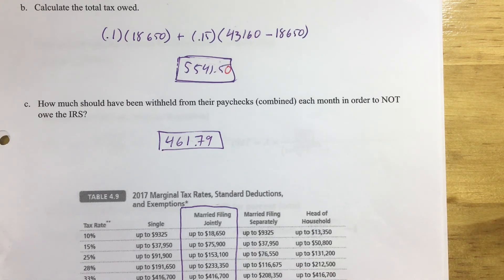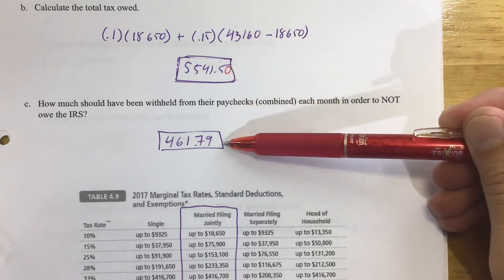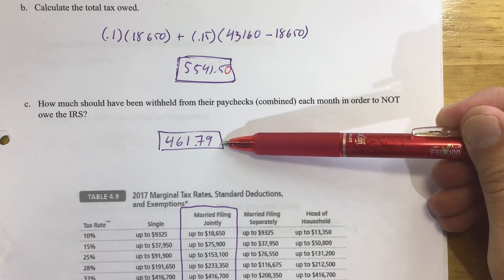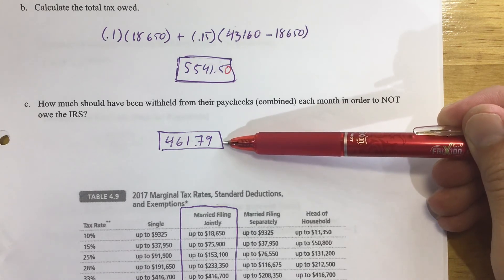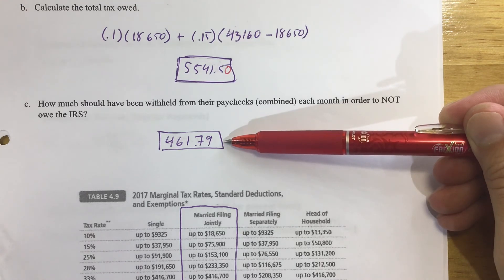Part C: how much should they withhold from their paychecks each month so they don't owe the IRS at year end? Take the total taxes owed — $5,541.50 — and divide by 12. That comes out to $461.79 per month. As long as that amount is withheld from their paychecks monthly, at year end everything balances out — they won't owe anything, and they also won't receive a refund check.